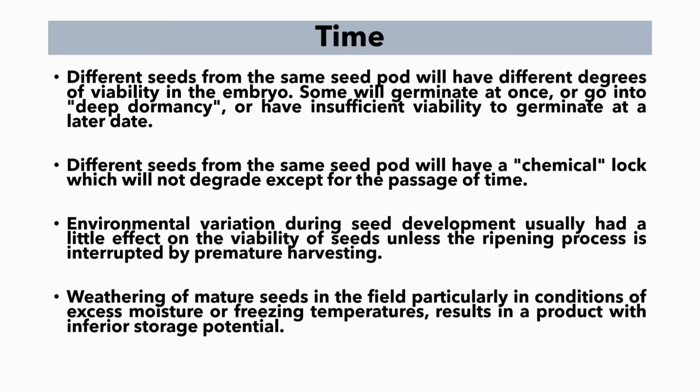The last pre-harvest factor is time. Different seeds from the same seed lot will have different degrees of viability in the embryo — some will germinate at once, go into deep dormancy, or have insufficient viability to germinate at a later date. Similarly, different seeds from the same seed lot will have a chemical lock which will not degrade except for the passage of time.